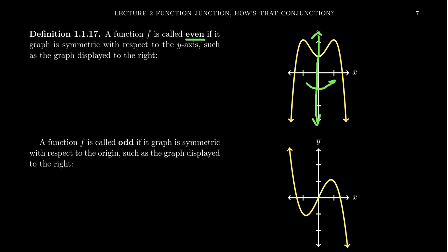That is, if you were to reflect the graph across the y-axis, you'll get the exact same picture. It's just a mirror image of itself when you look across the y-axis. This is what we refer to as an even function.